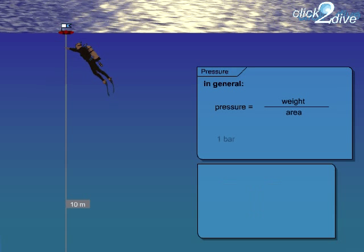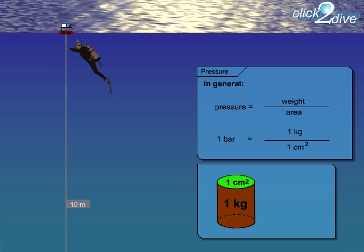The pressure of 1 bar is generated by the weight caused by a body with the weight of 1 kilogram on an area of 1 square centimetre. Alternatively, a water column with a height of 10 metres generates a pressure of 1 bar.